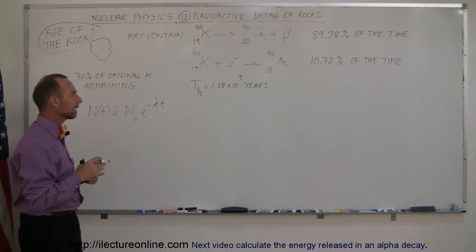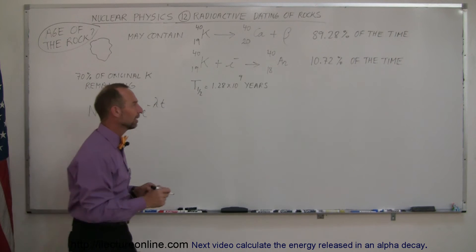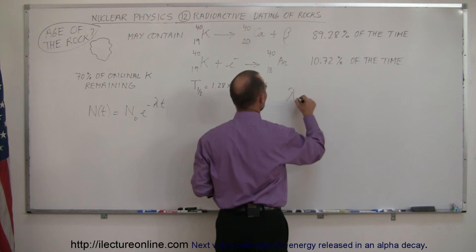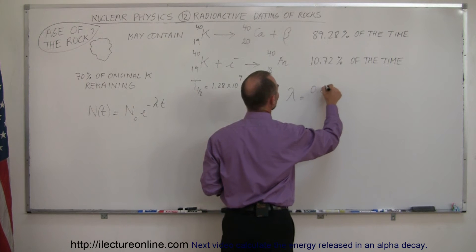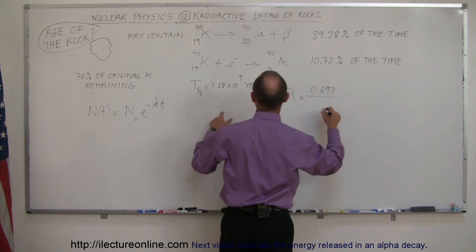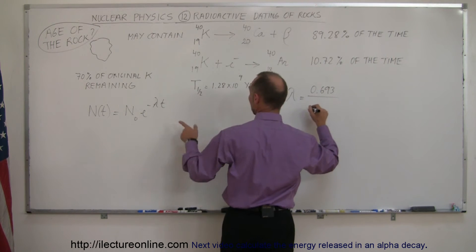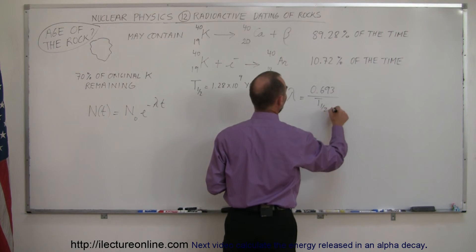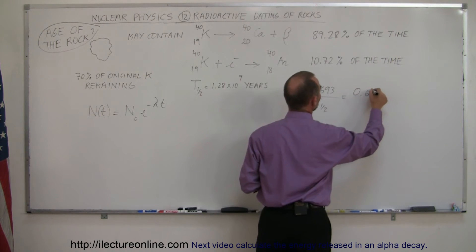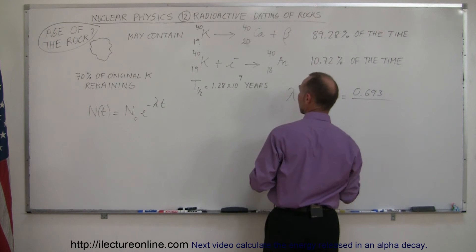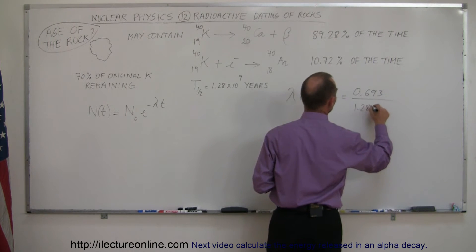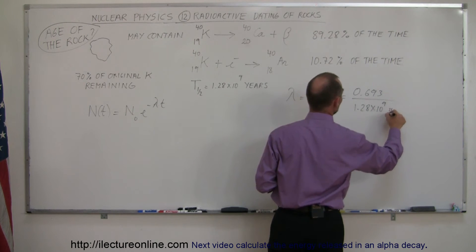So let's find out what the decay constant is using the half-life. And the half-life, t sub 1/2, is equal to 0.693 divided by 1.28 times 10 to the 9 years.